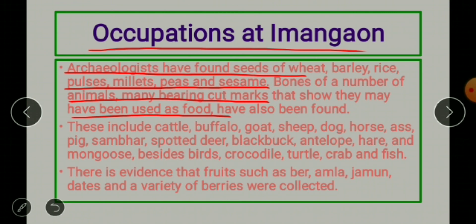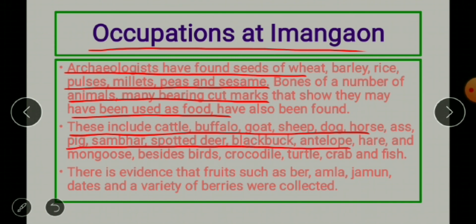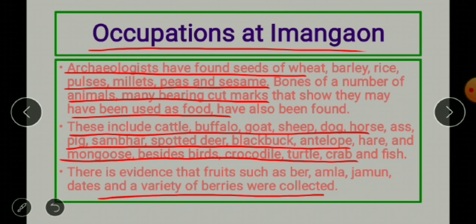The animals found include cattle, buffalo, goat, sheep, dog, horse, ass, pigs, sambar, spotted deer, black buck, antelope, hare, and mongoose, besides birds, crocodile, turtle, crab, and fish. There is also evidence that fruits such as ber, amla, jamun, dates, and a variety of berries were collected.